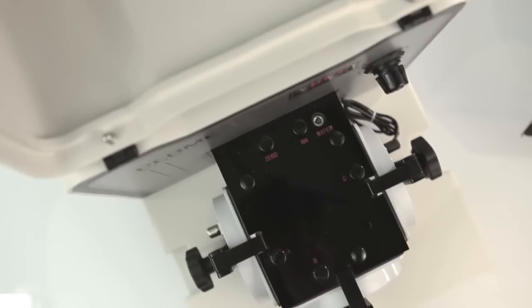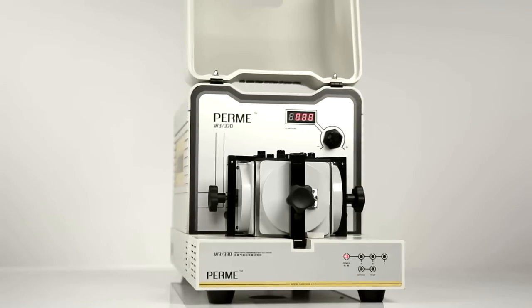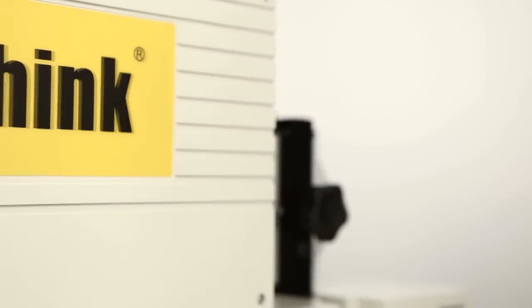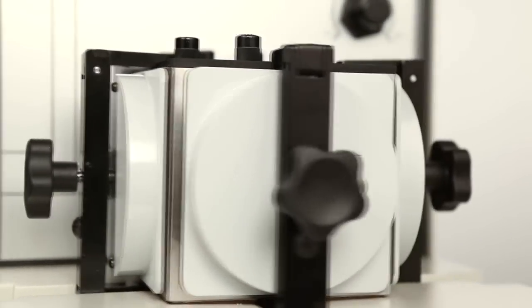W-3-3-0 is LabThink's latest generation of automatic WVTR testing system. It adopts an integrated test unit with three vertical cells, which is a patented design of LabThink.